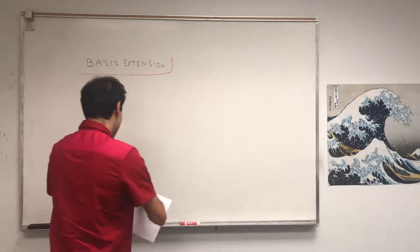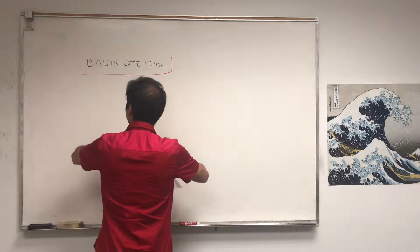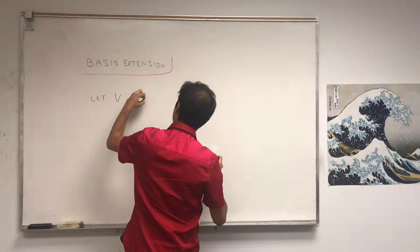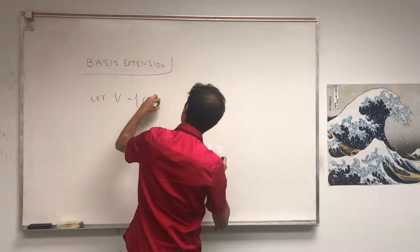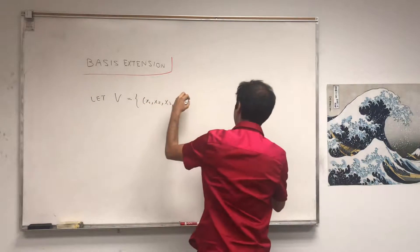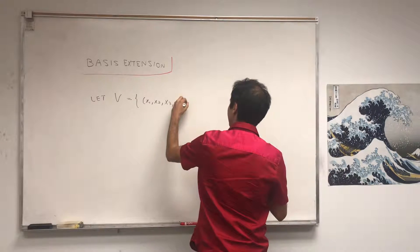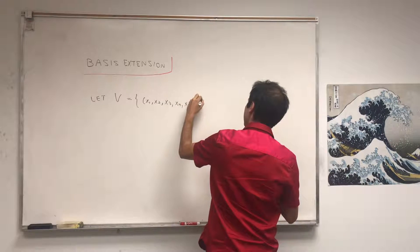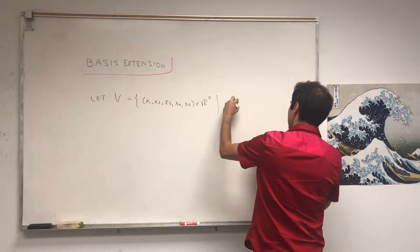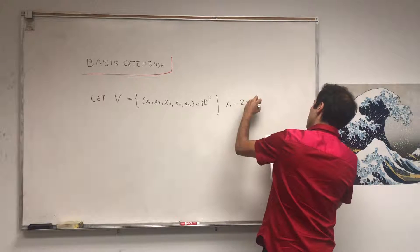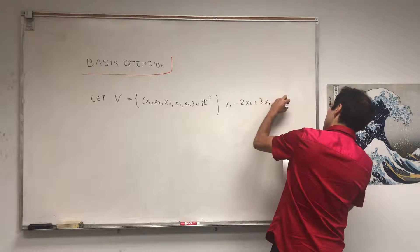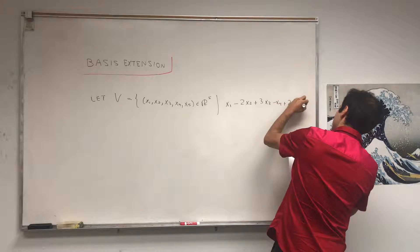So here's a neat problem. Let V be the vector space of vectors (x1, x2, x3, x4, x5) in R^5 such that the following equation holds: x1 minus 2x2 plus 3x3 minus x4 plus 2x5 equals zero.